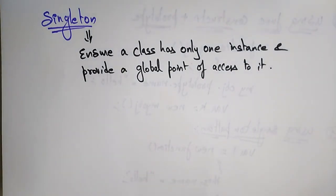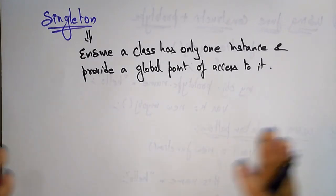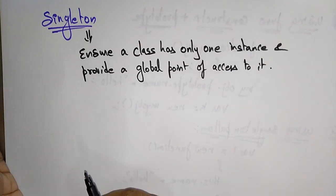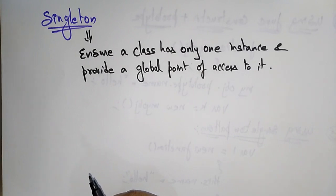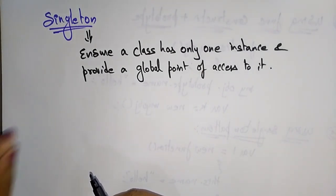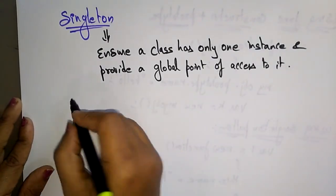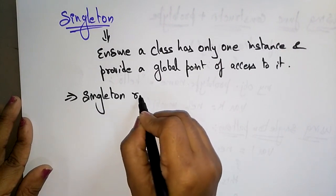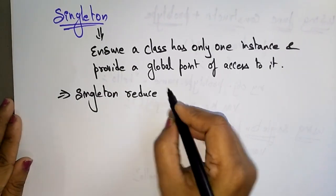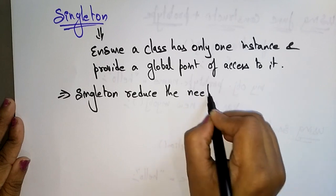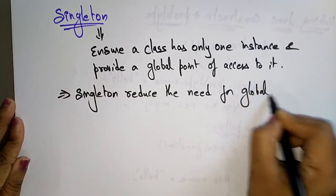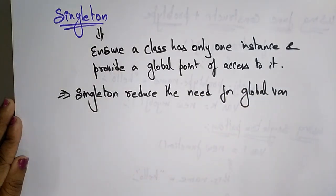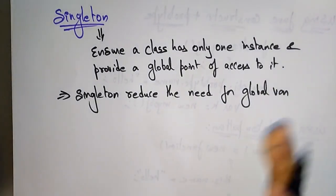The Singleton pattern ensures a class has only one instance and provides a global point of access to it. Singletons reduce the need for global variables, which is particularly important in JavaScript because it limits namespace pollution and the associated risk of name collisions.